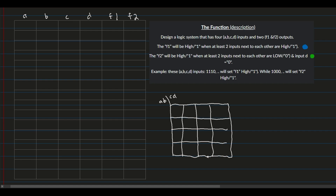After making the four rows and columns, we fill in all the different combinations for the kmap. Along the top for AB, we have: 00, 01, 10, 11. Then for CD along the side, we also have: 00, 01, 10, 11.